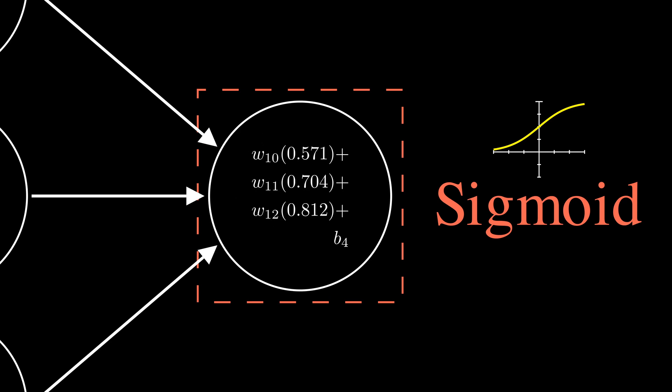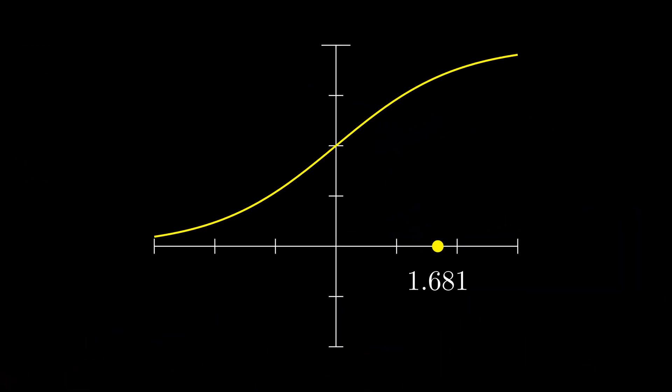We are then going to take the unique weights between the hidden and output node and substitute those as well. We will complete our addition and multiplication operation, add our bias value unique to this node as well. And that will be our raw output.